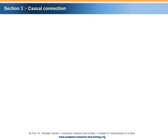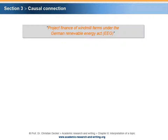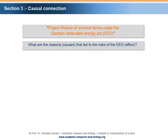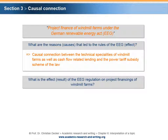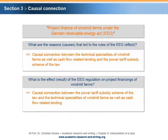If we have a topic without a problem setting, and this topic would be project finance of windmill farms under the Renewable Energy Act, we would raise the following questions. What are the reasons or causes that led to the rules of the EEG? This question implies a causal connection between the technical specialties of windmill farms as well as cash flow related lending and the power tariff subsidy scheme of the law. Another question is: what is the effect or result of the EEG regulation on project financing of windmill farms? This implies a causal connection between the power tariff subsidy scheme of the law and the technical specialties of windmill farms as well as cash flow related lending.